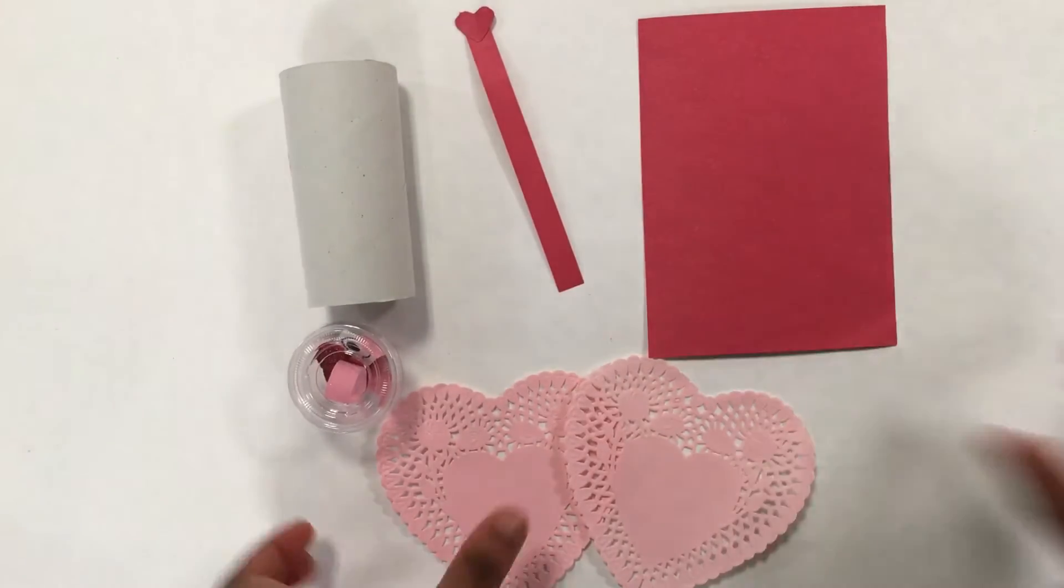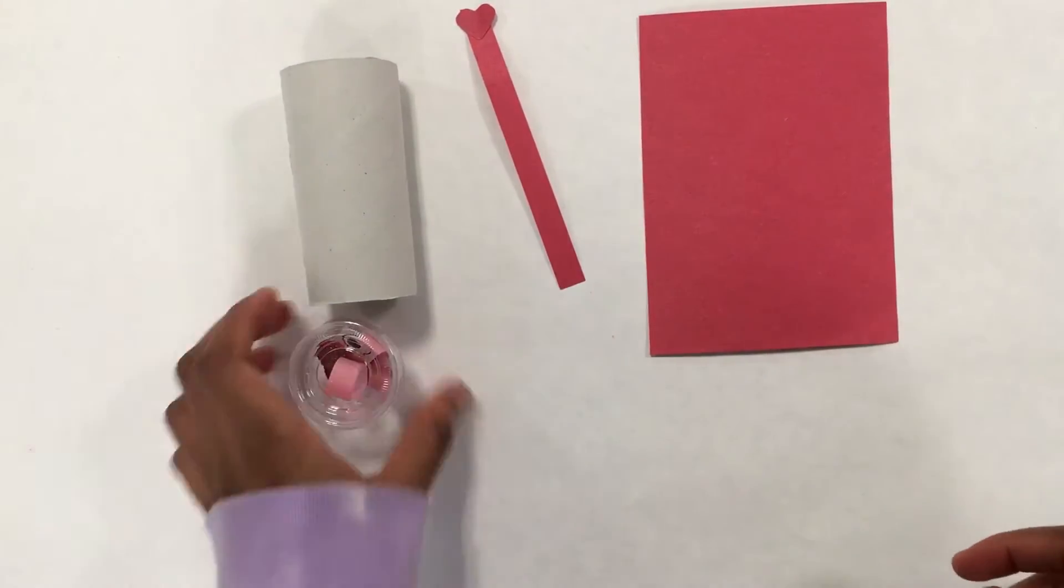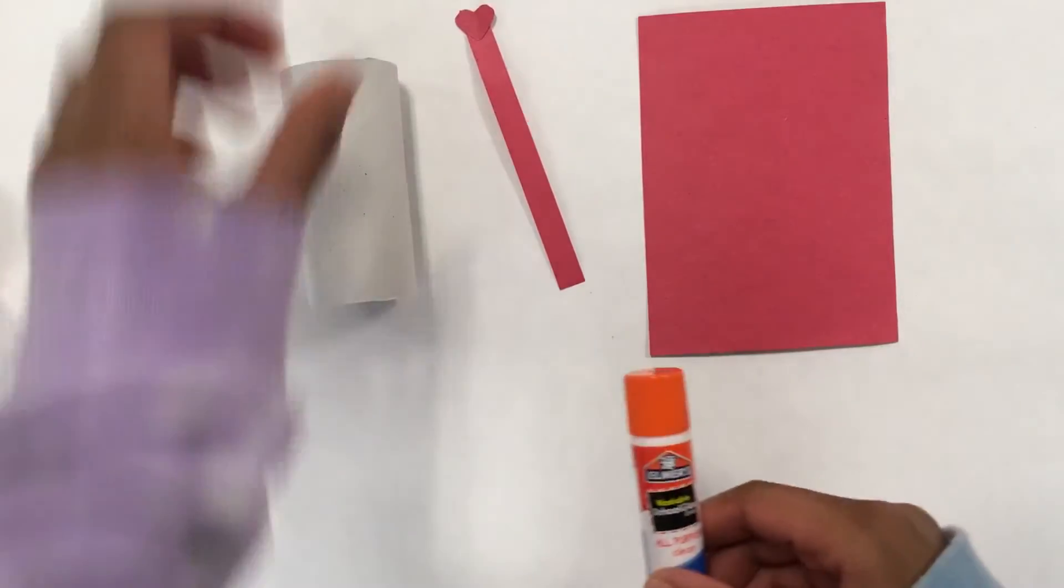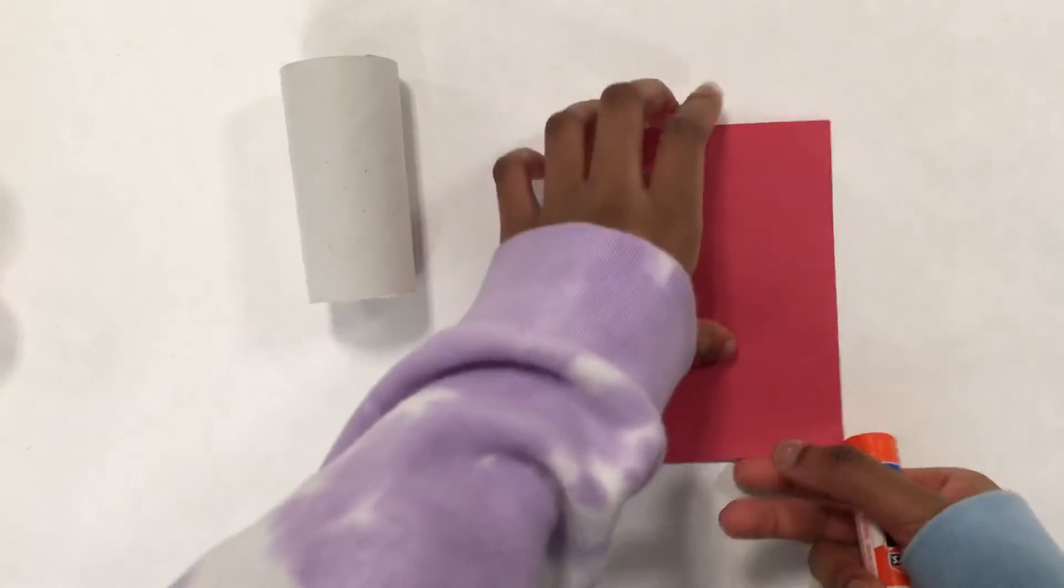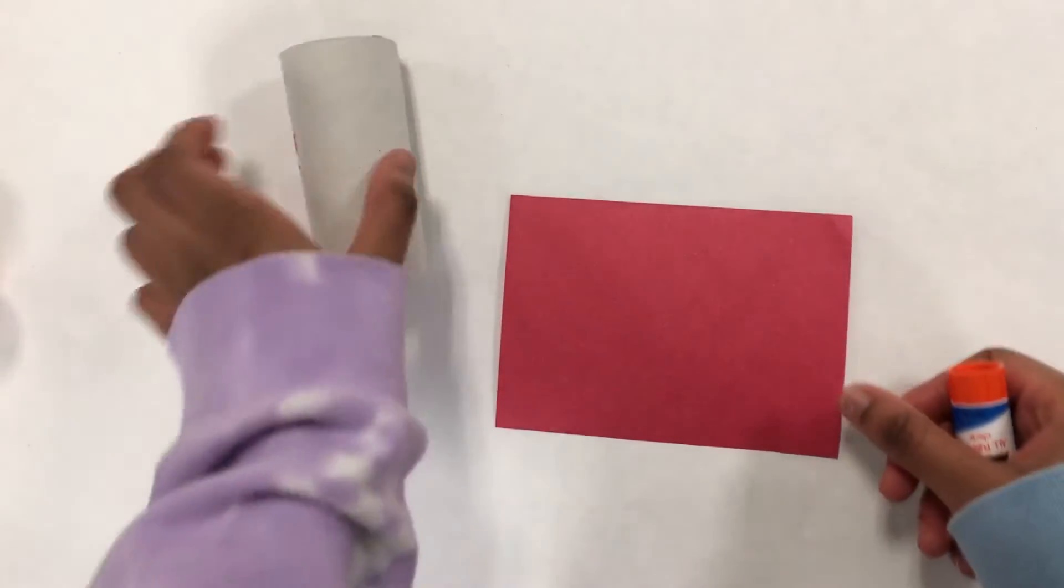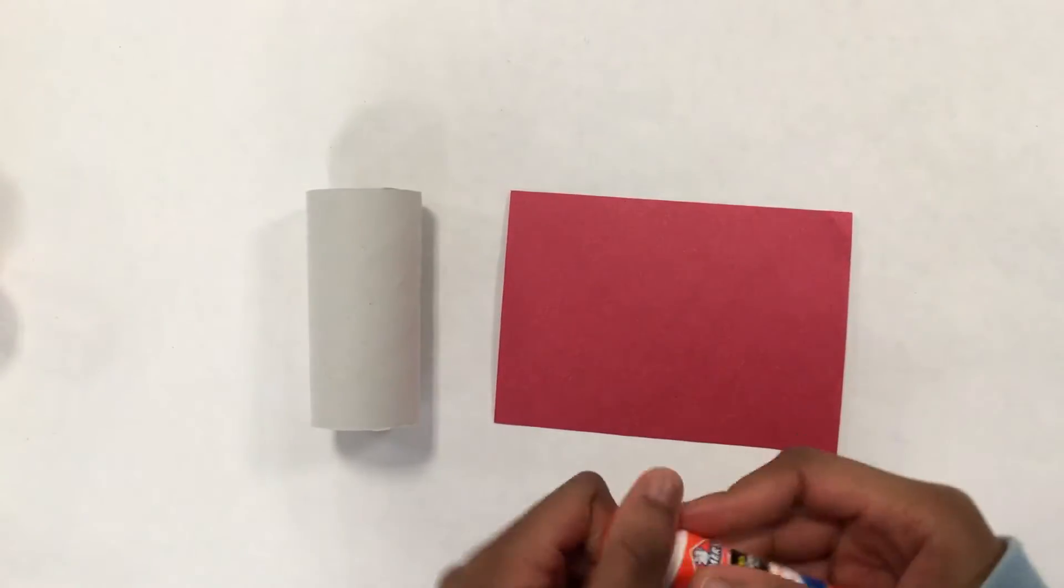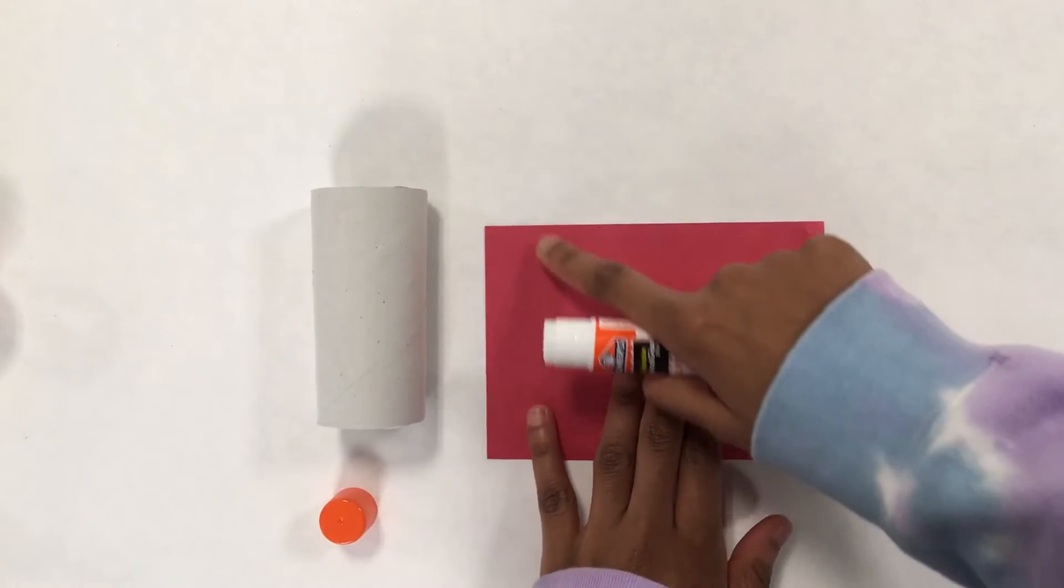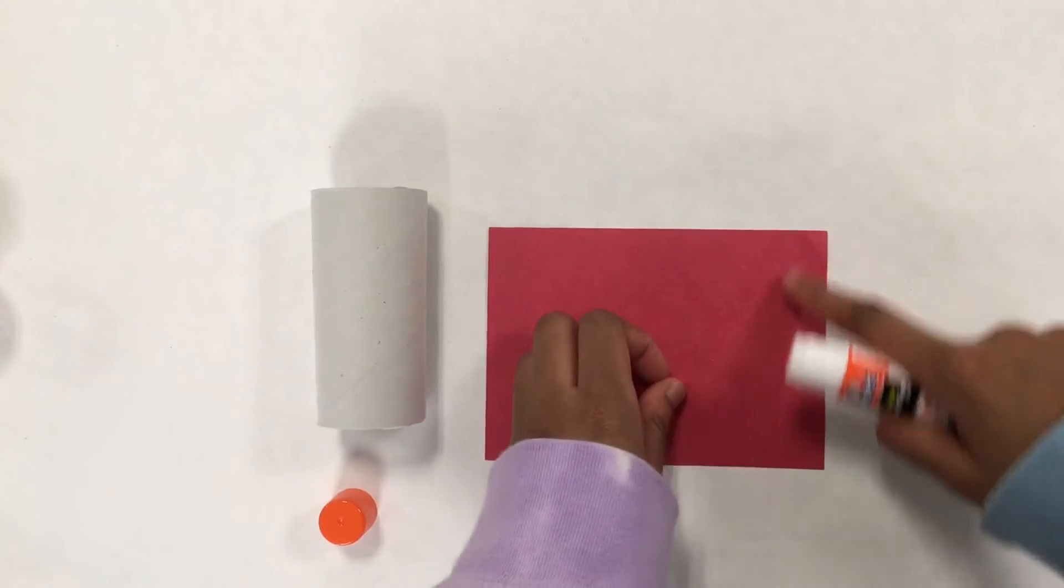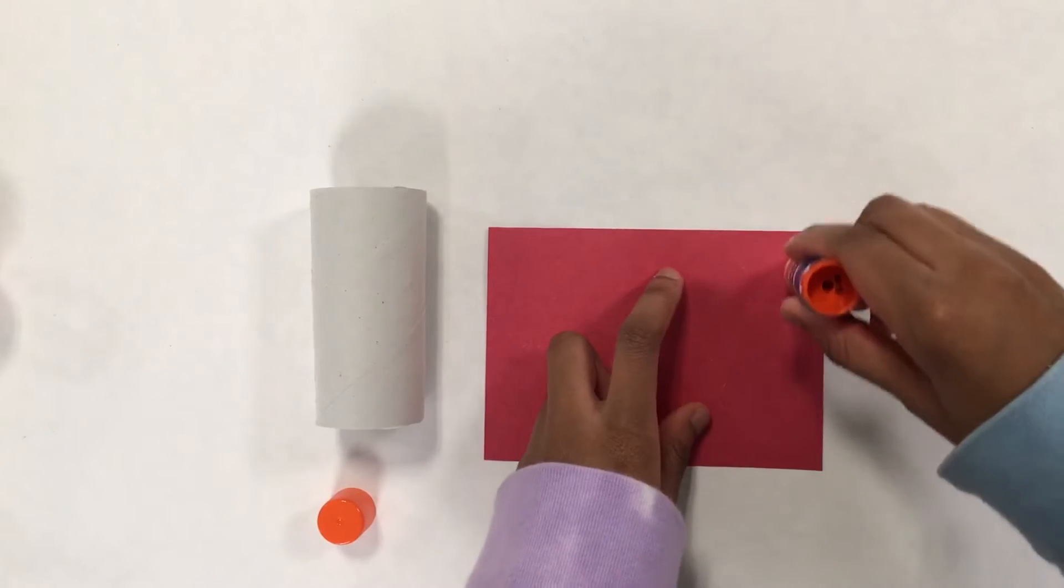Okay, so let's get started. You would also need glue. So get your red card and put it this way, and get your toilet paper roll. Then we open our glue and we will be gluing the sides of the square.